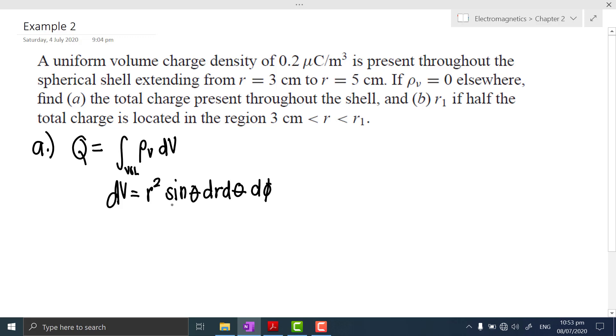What are the limits? Since it's a spherical shell, the limits for dr would be in the given 3 cm to 5 cm converted into meters, so that would be 0.03 to 0.05. The limits of θ would be from 0 to π for a complete sphere. And the limits of dφ is from 0 to 2π, again, for a complete sphere.